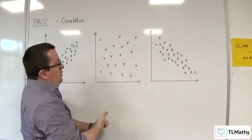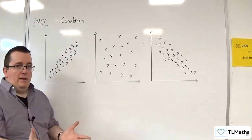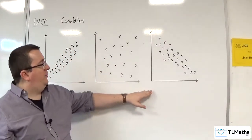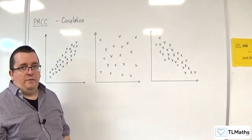This is no correlation because the data is all over the place, and as one variable is increasing, it's not easy to see what's happening to the other variable.